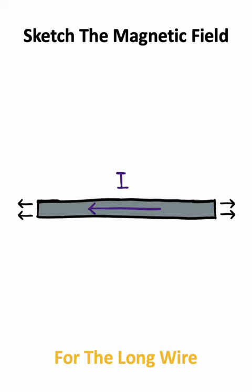In this problem, we are trying to sketch the direction of the magnetic field for a long wire. It is given that there is a current flowing through this wire, and moving charges are going to cause a magnetic field.